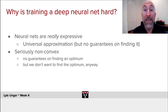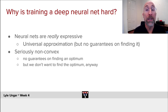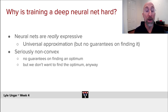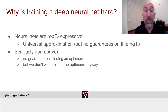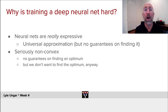Why is training a deep neural net so hard? At some level the answer is that neural nets are really flexible, very expressive approximation schemes. They can in theory approximate any reasonable function — not just nicely behaved ones, but also weird things like language. They can even learn to do multiplication and discrete computations.